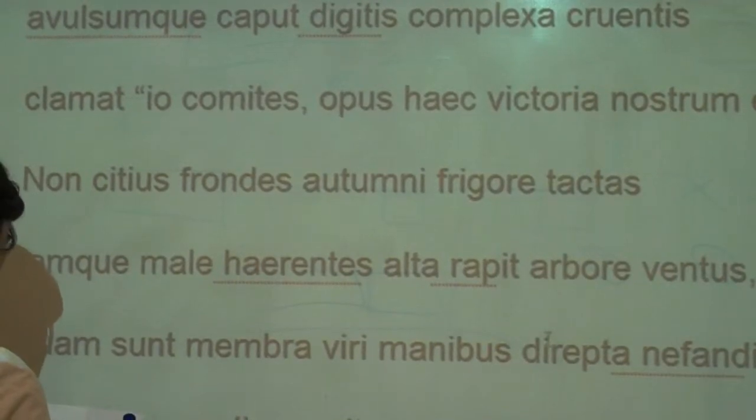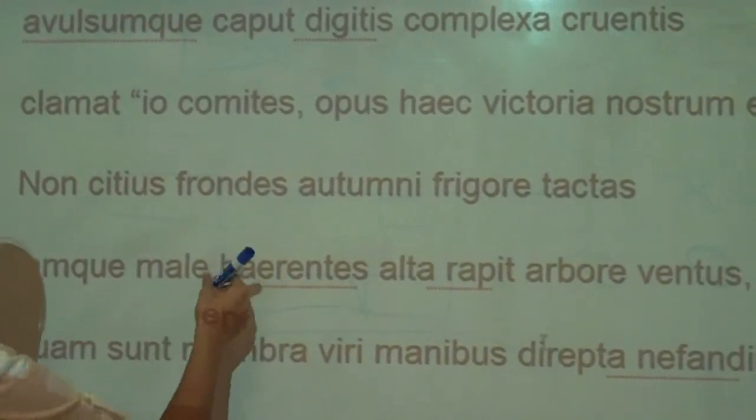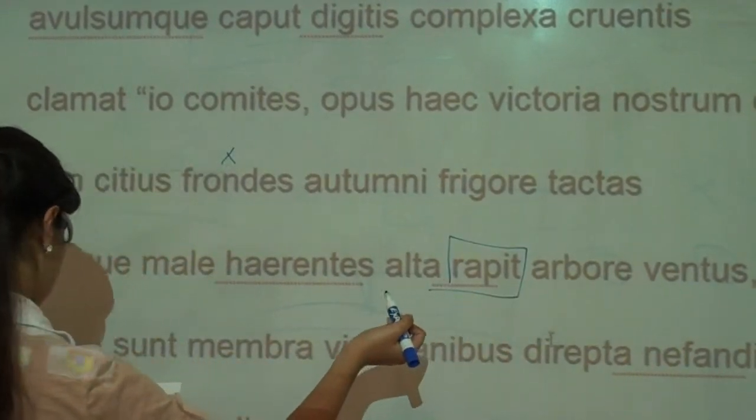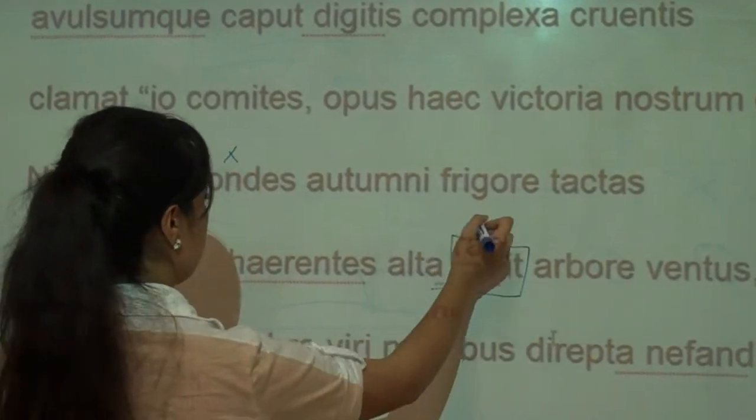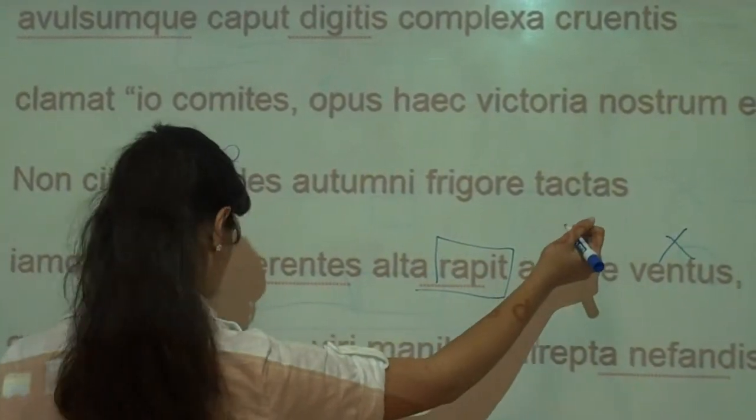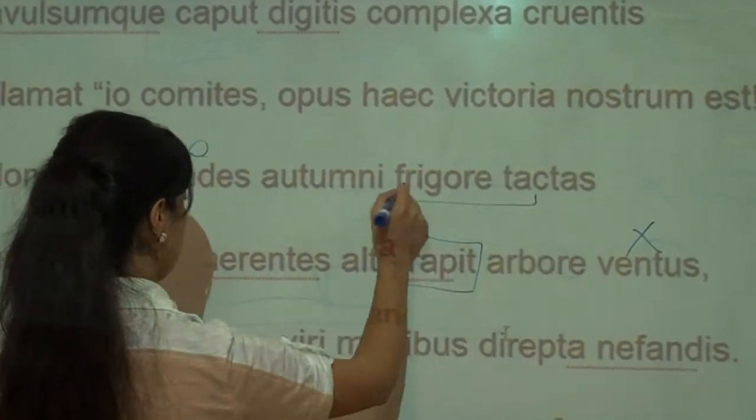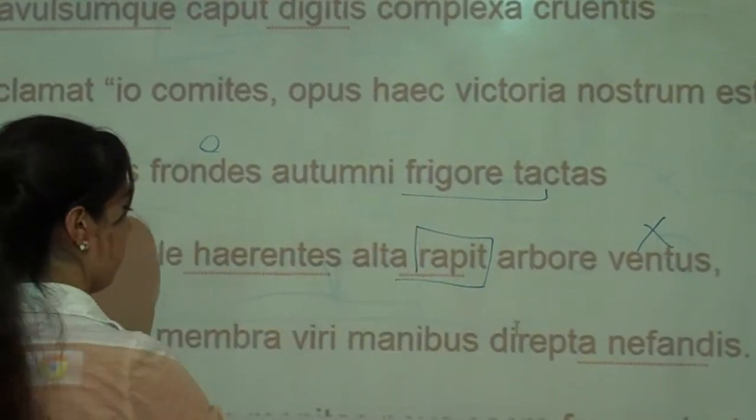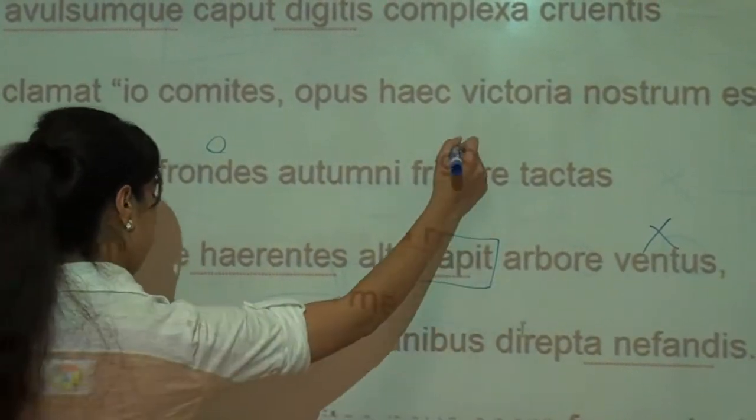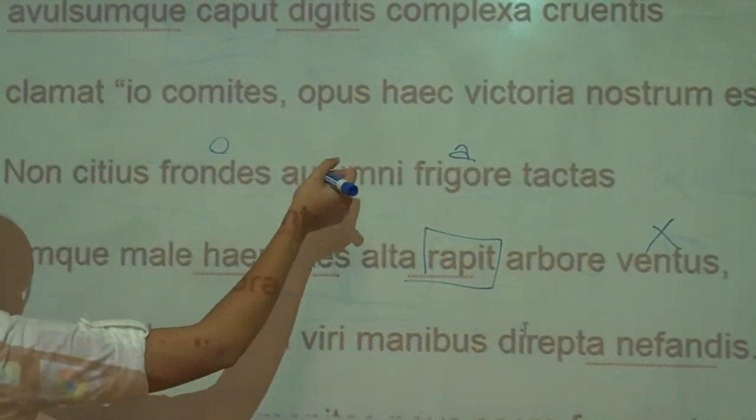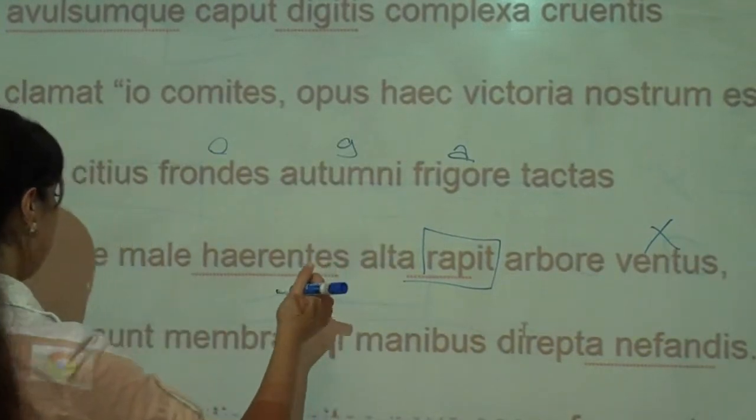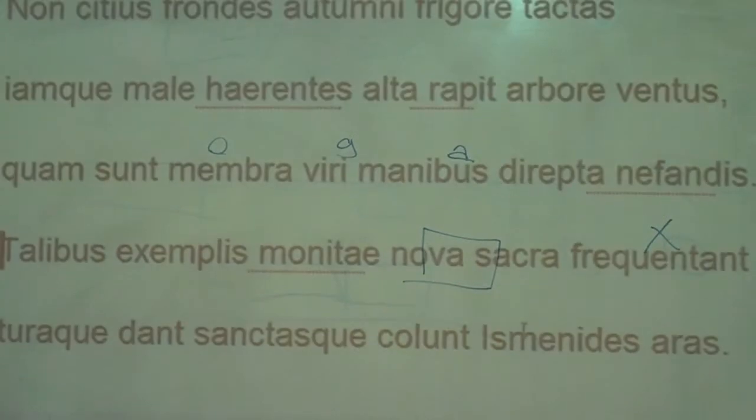Then leaves - grasped by the, actually ventus is a subject so like ventus is grabbing the leaves. Yeah, the wind snatches the leaves. What is 'tactas' about, like touching? Yeah, touching. And 'haerentes' clinging, also touching. With the frigid autumn.